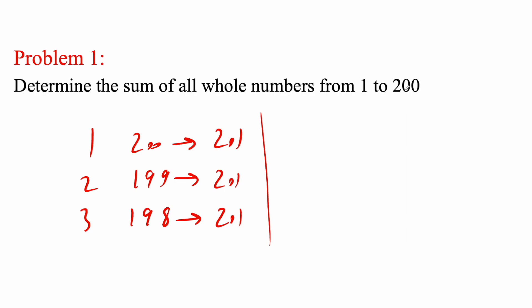And again, 1 to 200, we know there's going to be 200 numbers, and we're pairing them. So 100 pairs. And each pair is giving us 201. And so 100 times 201 would be 2, 0, 1, 0, 0. So we get 20,100 as our final answer.